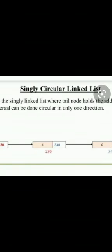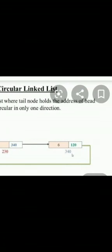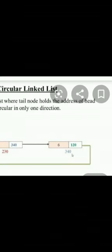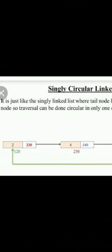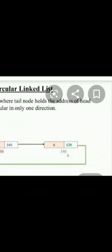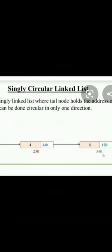For insertion at the last position, suppose you want to insert a new node after the node at address 340, which is the last node. You create a new node, add data values, and in its address field store the address of the very first node (120), maintaining the circular structure. Then the previous last node at address 340 has its link field updated to store the address of the newly created node.